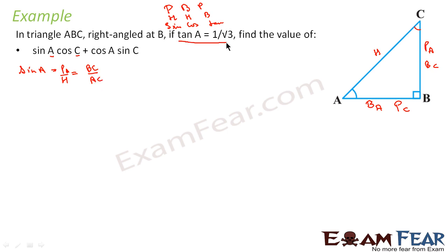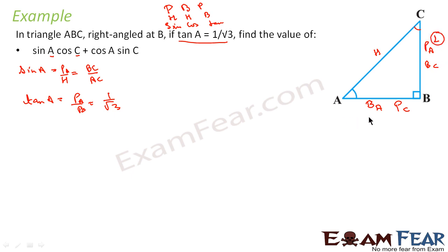We are given that tan A equals 1 by root 3. Since tan A equals P/B, we get P of A divided by B of A equals 1 by root 3. So if we assume BC equals 1, then AB equals root 3.